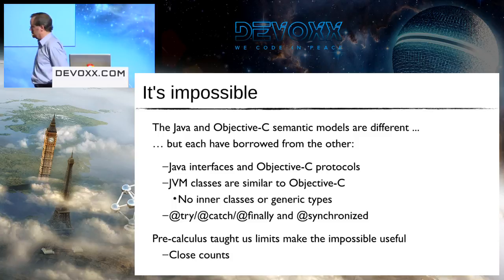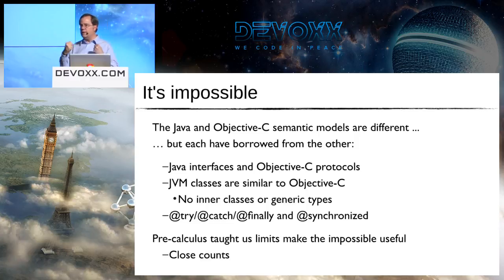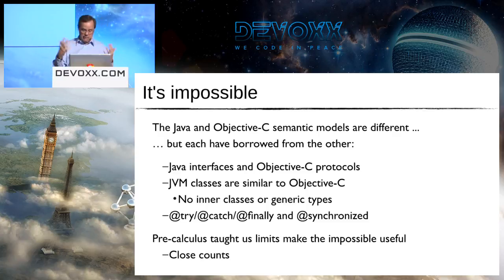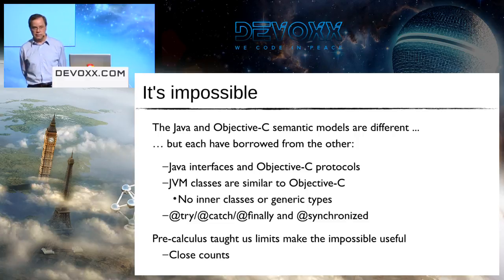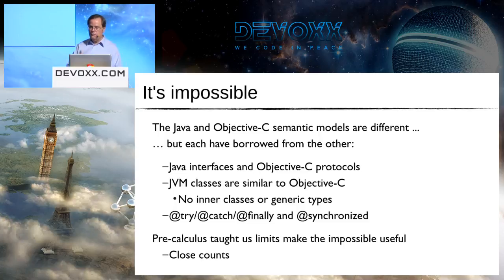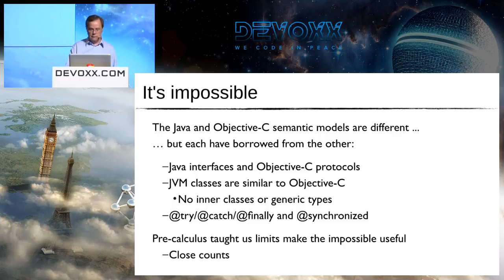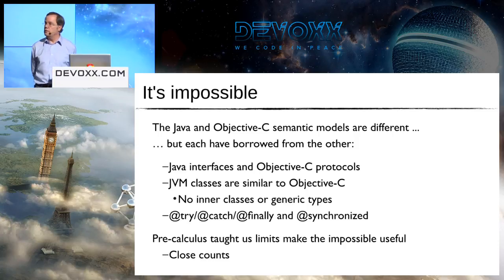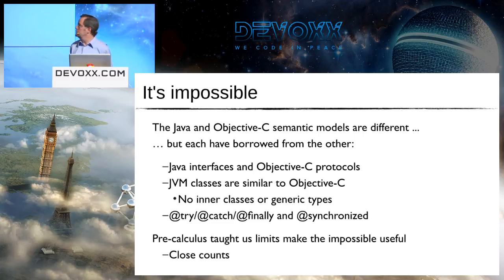The reason it won't work is because the goal we're trying to do is impossible - just flat out. Any one of you who's figured out a way that we cannot do translation from Java to iOS, you're welcome to stand up and share it, but we already know. It's impossible. The reason for that is because the Java and Objective-C semantic models are different. But the good news is that Java and Objective-C have actually borrowed a lot from each other over the years. Java interfaces and Objective-C protocols are very, very similar.